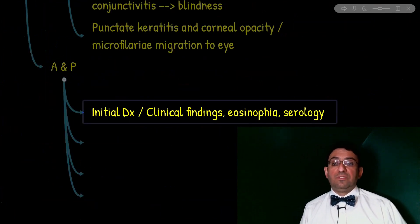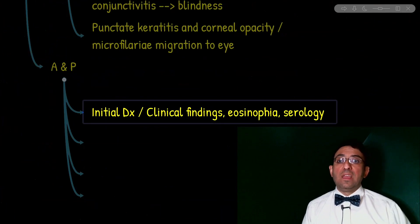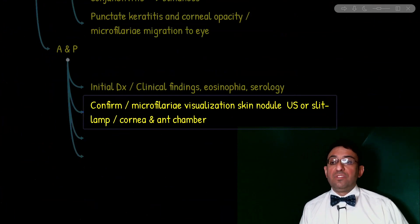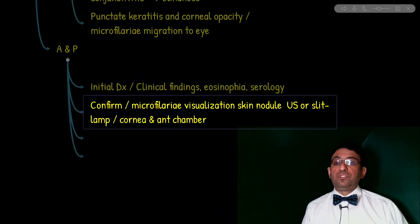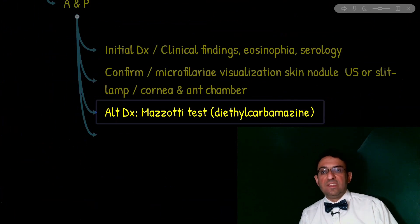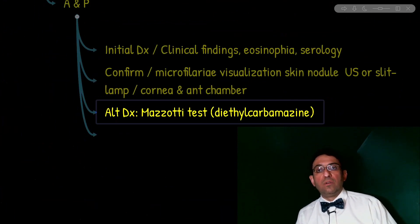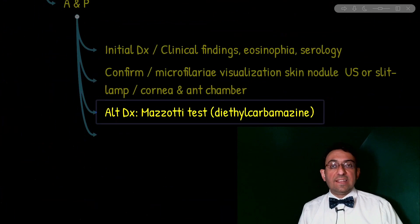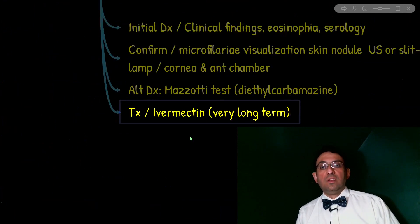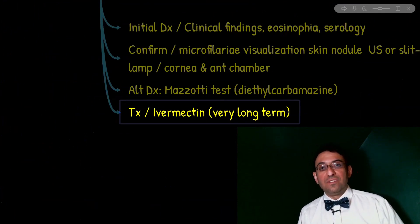Diagnosis is initially clinical, supported by eosinophilia and serology. Confirmatory steps include visualizing microfilariae or adult worms in skin nodules, or via slit lamp in the anterior chamber and cornea. An alternative diagnostic method is the Mazzotti test — an oral dose or skin patch of diethylcarbamazine that quickly kills microfilariae in the skin nodule and causes severe itchiness. Treatment is ivermectin, which requires very long-term administration.